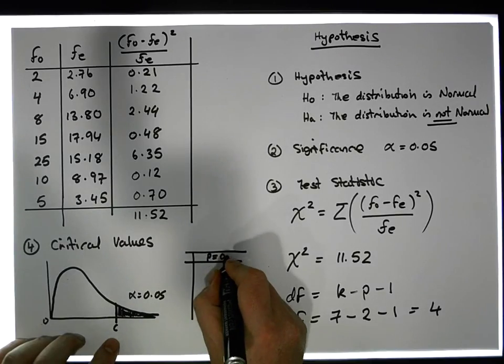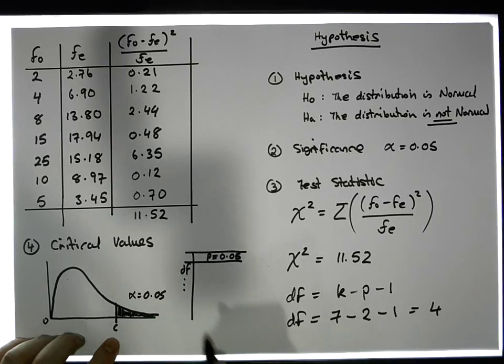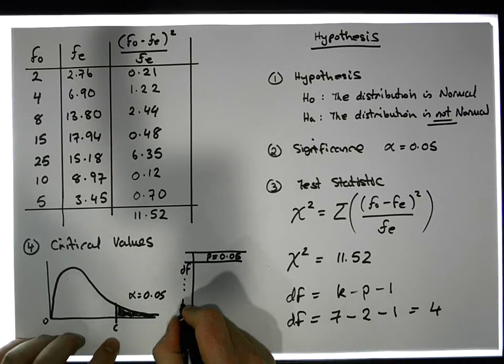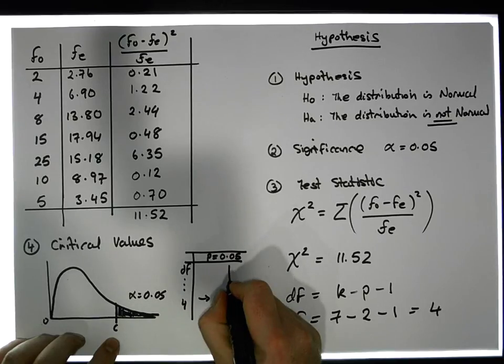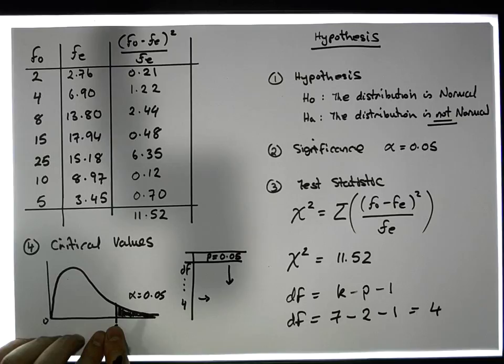Our degrees of freedom is four, so this should give us the critical value for a curve with four degrees of freedom that has 0.05 of the area in its right-hand tail.